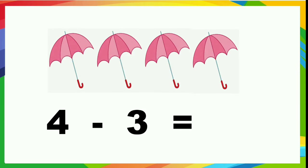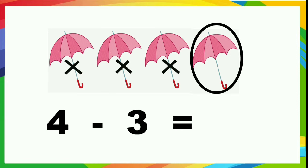Now, see 4 umbrellas are there. So how many you need to take away? 4 minus 3. 3 you need to take away. Take out 3 umbrellas: 1, 2, 3. How many left, children? How many umbrellas left? 1. Yes. 4 minus 3 is equal to 1.